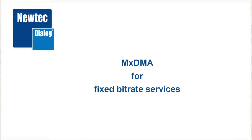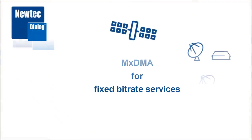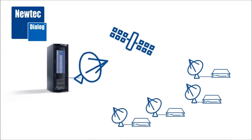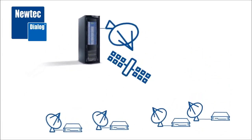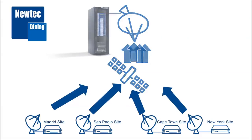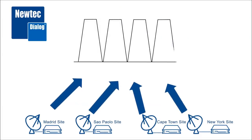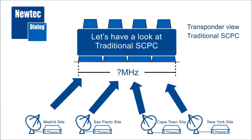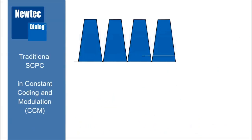Welcome to the world of new tech dialogue. We will have a closer look at how to use MXDMA for fixed bitrate services, using an example network consisting of four sites. For MXDMA we are zooming in on the return part — sending traffic from the terminals back to the central hub. For the first part of this video we will look at how we used to do that using simple traditional SCPC.